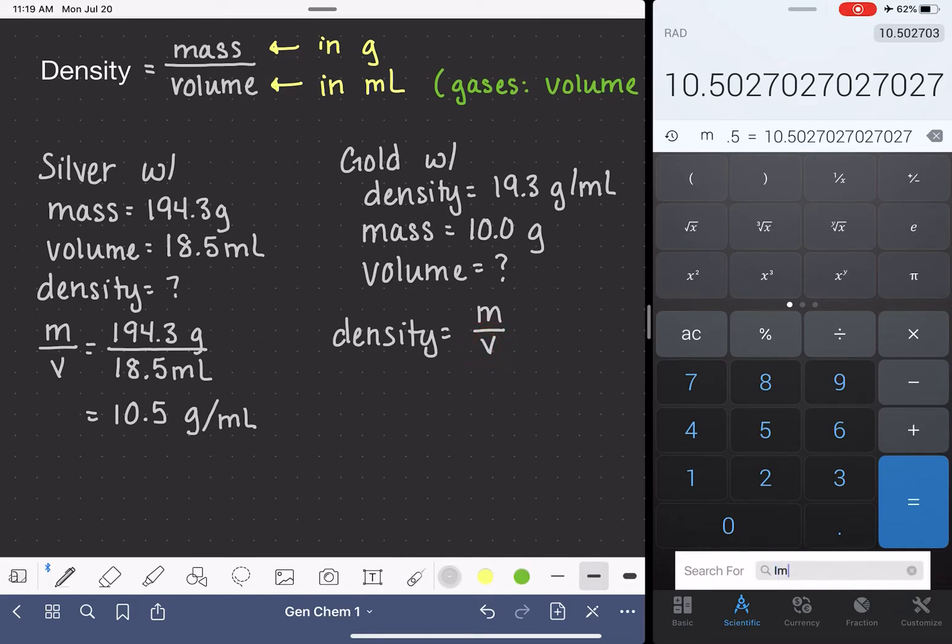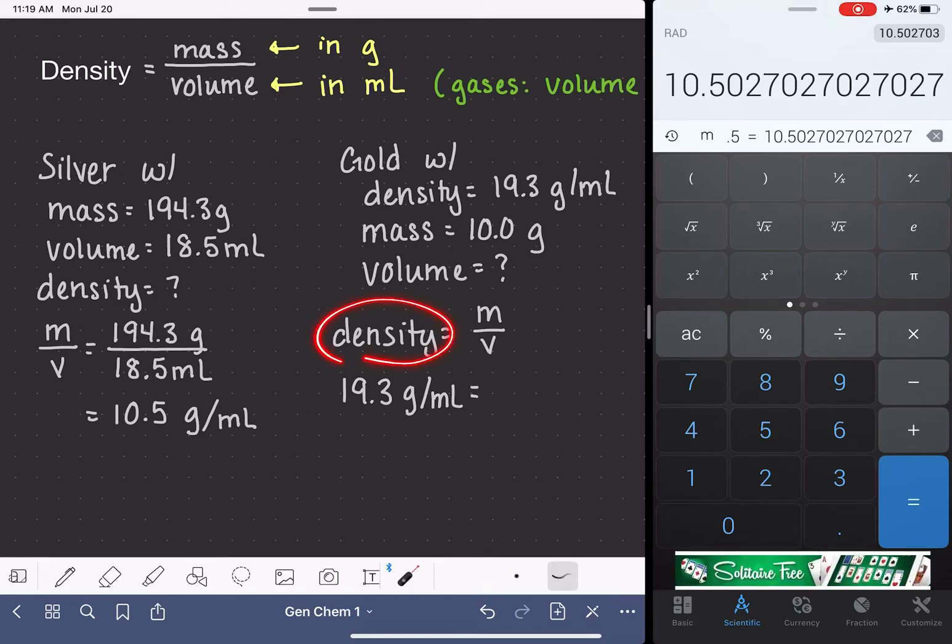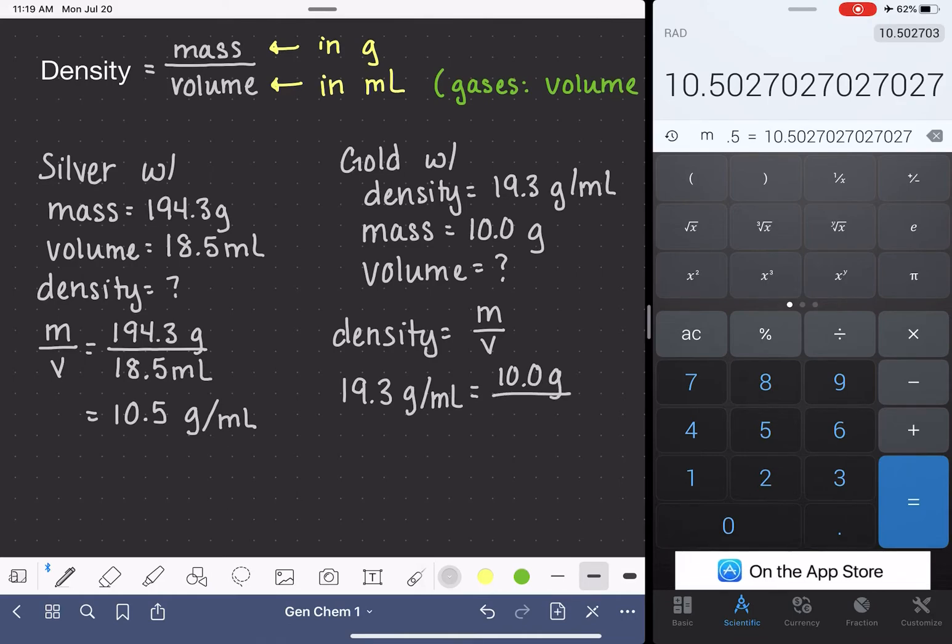We could rearrange the equation at this point to isolate the volume variable. But maybe your brains are feeling a little bit rusty, so let's just start by plugging in what we actually know. So we know density is 19.3 grams per milliliter. Mass, we know that to be 10 grams. And the volume, that's our unknown. We'll just call that X. So how can we solve for the X in this equation? Remember our properties of algebra. If we have an equality like this and we have a fraction on one or both sides, the numerator on one side times the denominator on the other side is equal to the numerator from one side times the denominator from the other side.